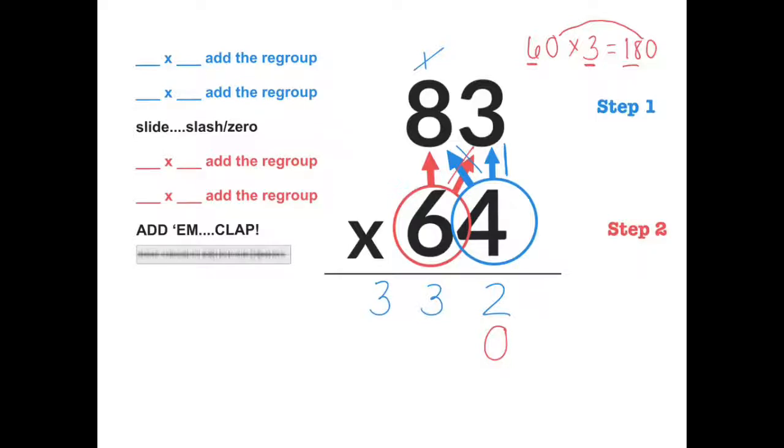So then I draw my line and I can multiply. Six times three equals eighteen. I put an eight right under my three and I regroup the one to the next problem. The next problem is six times eight, which equals forty-eight. Add the regroup, that one, to get forty-nine. So I put a nine here and a four here.